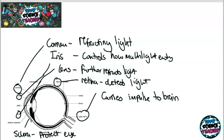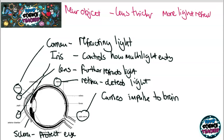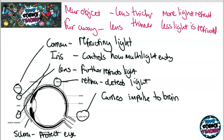When looking at things that are far away or close up, our eye needs to change its shape in order to focus the object. To focus on a near object, the lens becomes thicker, which allows more light rays to refract and therefore the object becomes clearer. If the object is far away, the lens becomes thinner, which means less refraction. That is all you need to know for this topic. I hope you have enjoyed it — please remember if you did to like the video and subscribe to the channel.